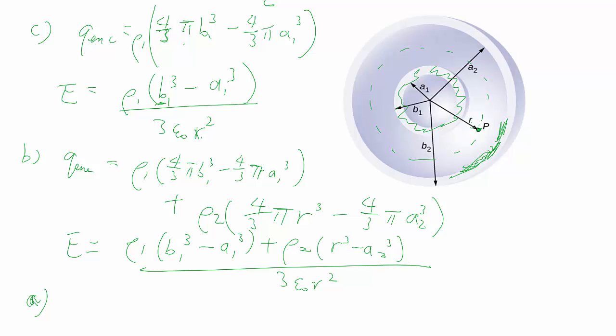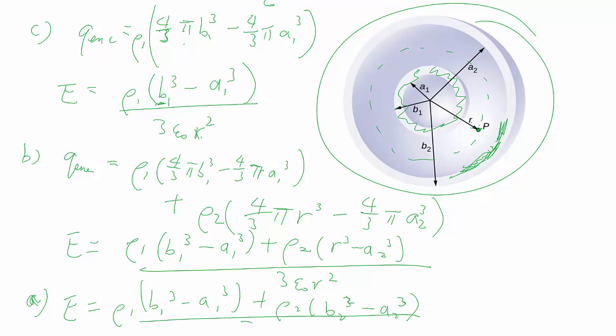And then for part a, we include everything of the outer sphere as well. So that should be not very surprising. That will replace what we had as r with b₂. And there you go.